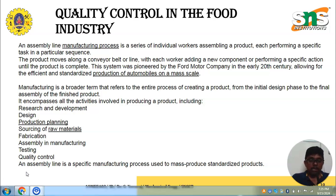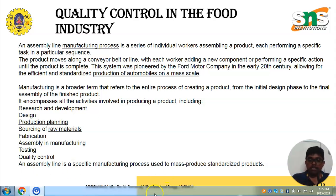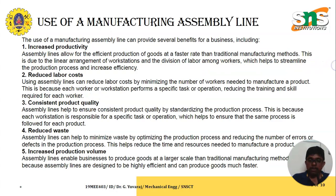An assembly line is a specific manufacturing process used to mass-produce standardized products. The use of a manufacturing assembly line can provide several benefits for businesses. First, it increases productivity by allowing for the efficient production of goods at a faster rate than traditional manufacturing.